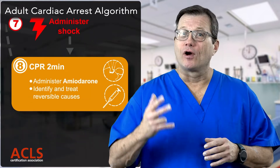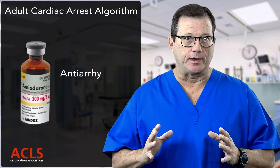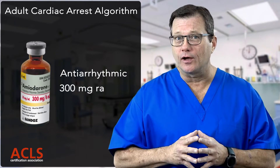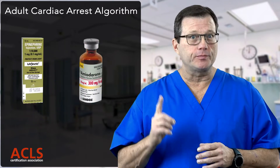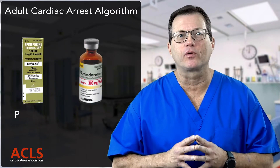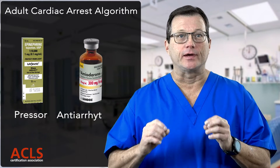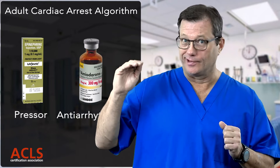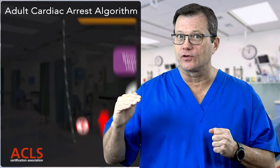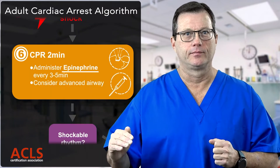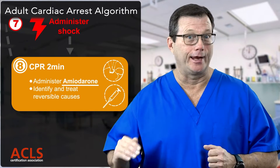After our third defibrillation, we're going to administer amiodarone. This is an anti-arrhythmic and you're going to administer 300 milligrams rapid IV push. So if you look, the first medication we administer was a presser — epinephrine. The second drug we administer is an anti-arrhythmic — amiodarone. In order: presser, anti-arrhythmic. If we kept going and we're going to give another drug, we go back to epinephrine, then amiodarone again — presser, anti-arrhythmic, presser, anti-arrhythmic.